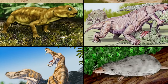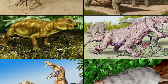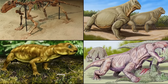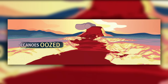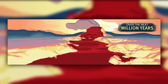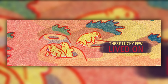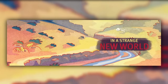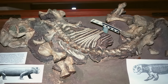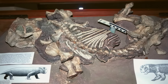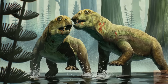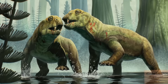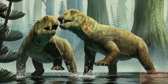The Permian extinction event wiped out almost 90% of all life on Earth, but not Lystrosaurus. They tunneled underground to deal with the disaster. The shape of Lystrosaurus' skull suggests it was a burrower, while its barrel chest may have held lungs capable of pulling in plenty of oxygen even in dusty air full of contaminants.